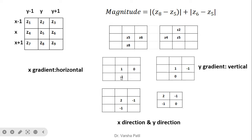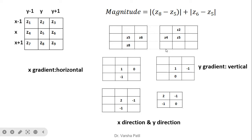To design the mask, the sum of coefficients should be zero since edges are high frequency signals. For the x gradient mask, we place 1 and -1 for z5 and z8, with 0 for z6. For the y gradient mask detecting vertical edges, we use 1 and -1 for z5 and z6, with 0 for the unused point. Both masks sum to zero.